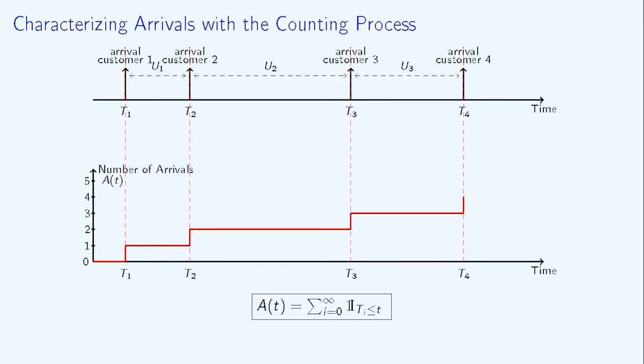Equivalently, A is the sum over i of the indicator functions of Ti lower than t, so the number of indexes i such that Ti is lower than t.